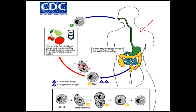Only the cyst stage can infect humans. If we ingest the cyst stage, we can get the disease. The cysts excyst in the small intestine and produce the trophozoite stage there. These trophozoites then pass to the large intestine, where they multiply by binary fission.